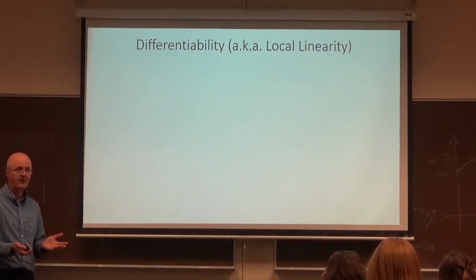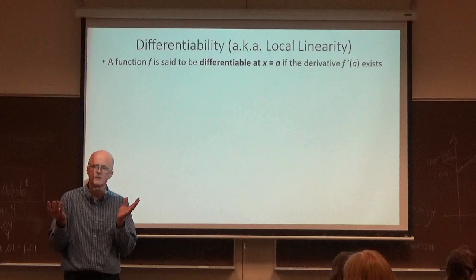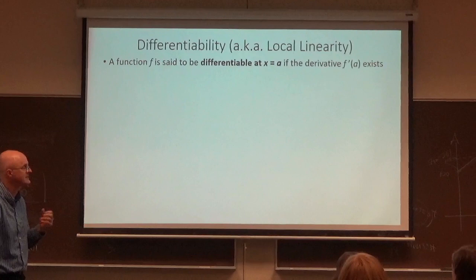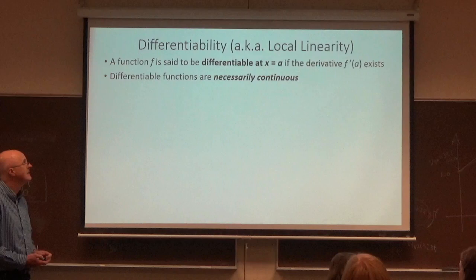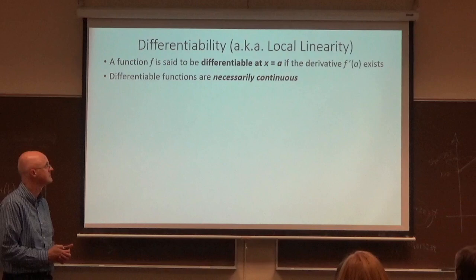First, let's review something we already know. We've already learned about differentiability. F is said to be differentiable at x equals a if the derivative f prime of a exists. I did mention this on Monday. There's an implicit assumption behind the scenes here. F must be defined at least near a as well. Differentiable functions are necessarily continuous. If you know the function is differentiable, it must be continuous. Therefore, if it's not continuous, it's also not differentiable.